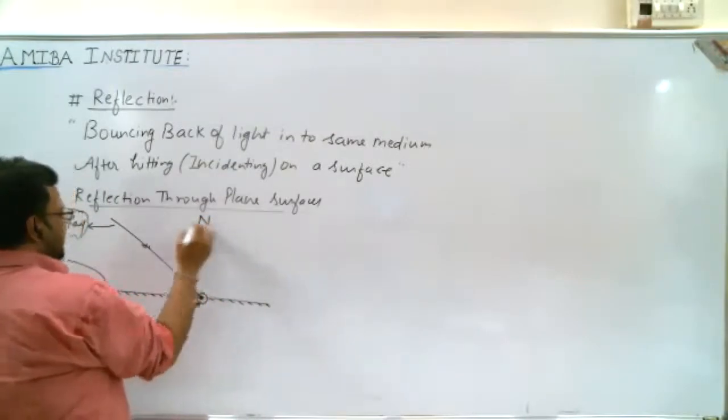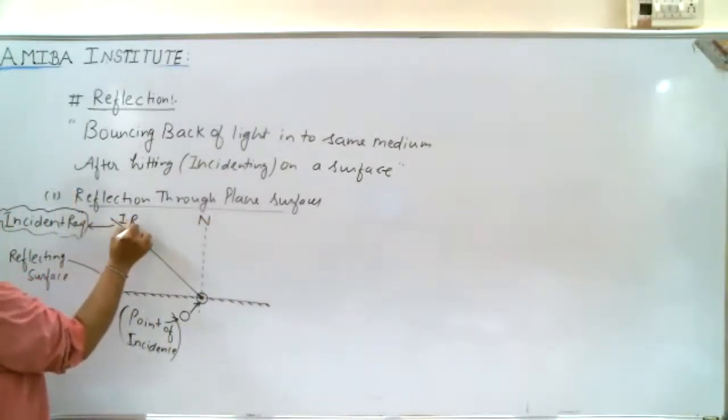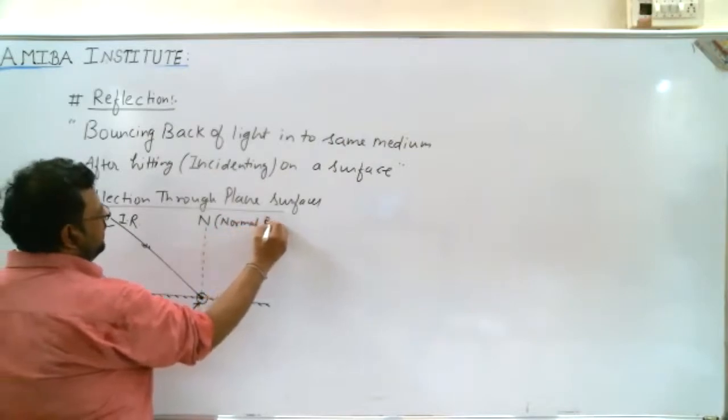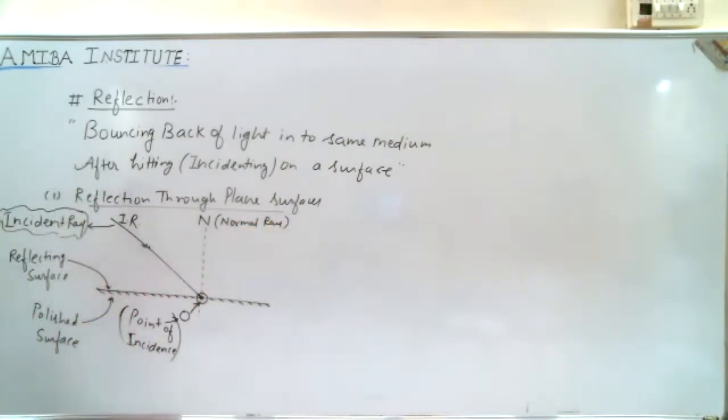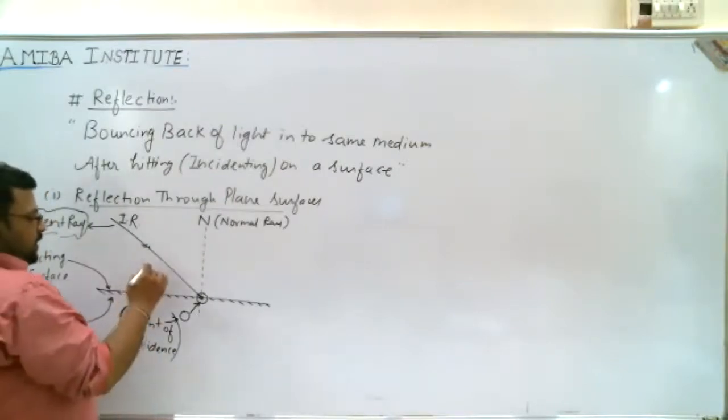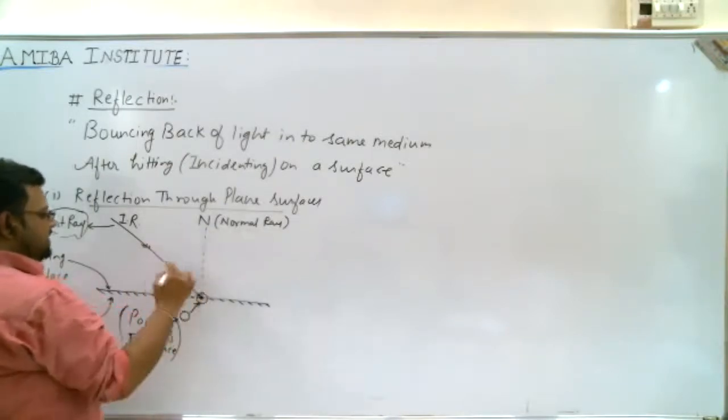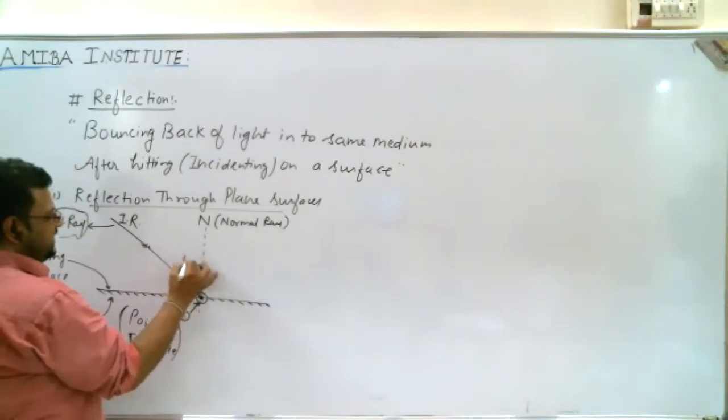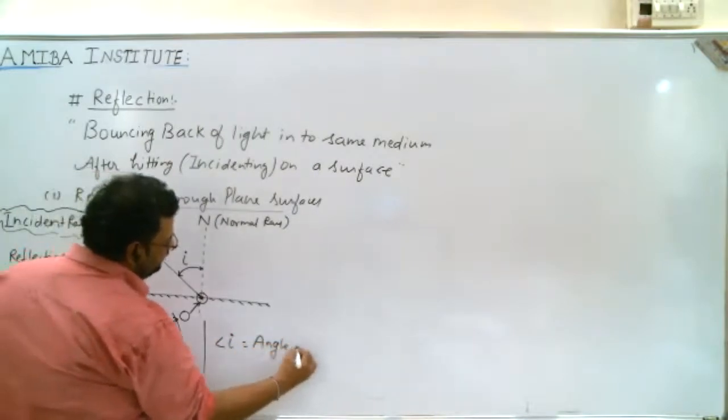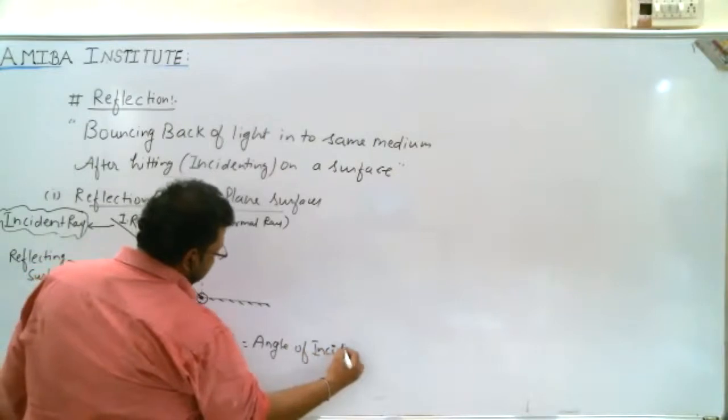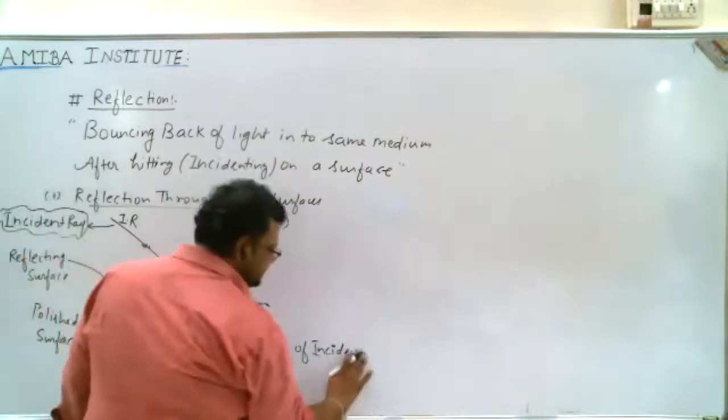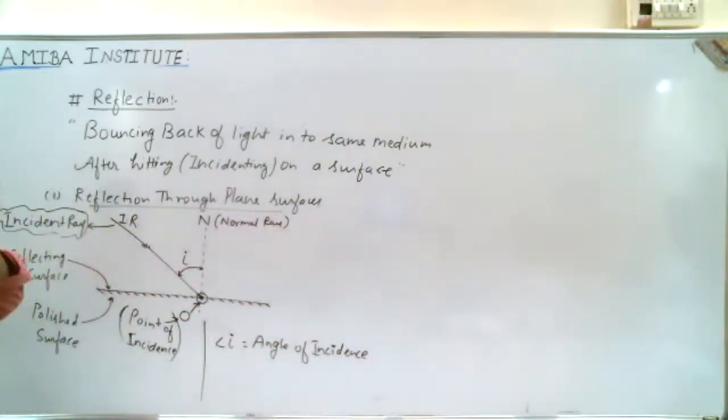We represent incident ray with symbol I and normal with capital N. The angle present between the normal and incident ray is called angle of incidence and represented by small i. So angle i is the angle of incidence or simply incident angle.